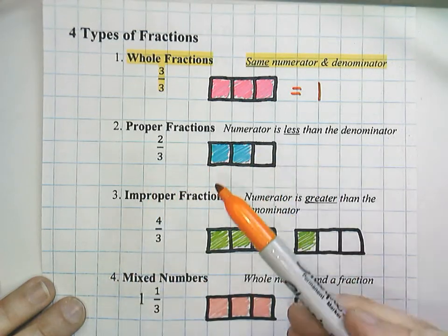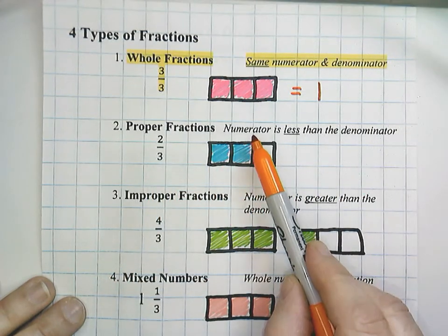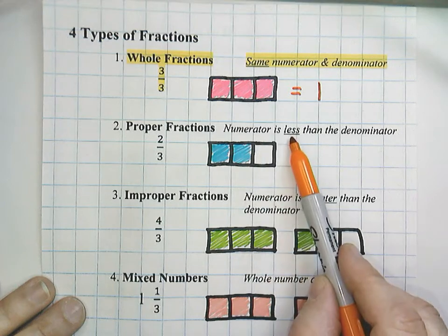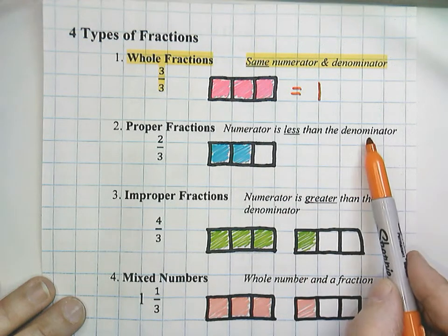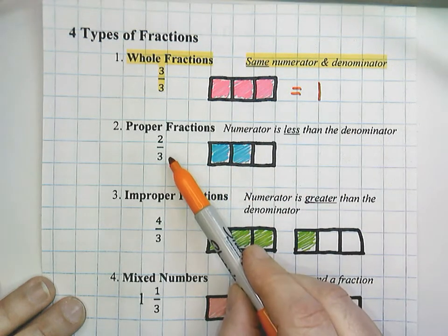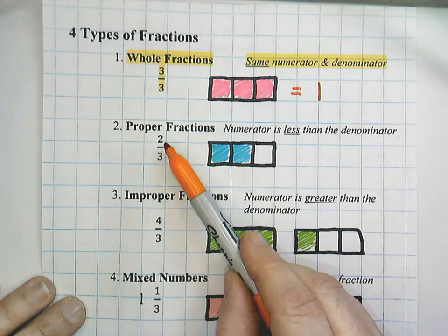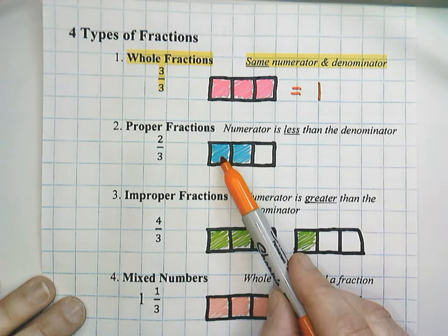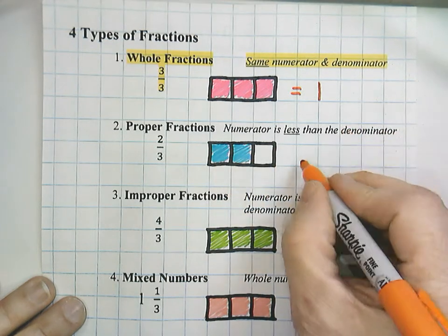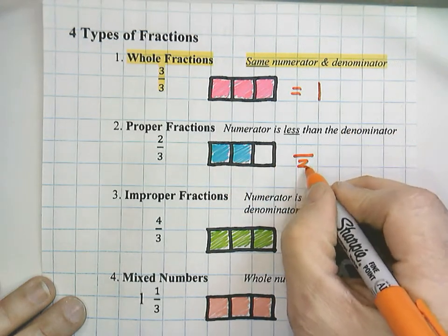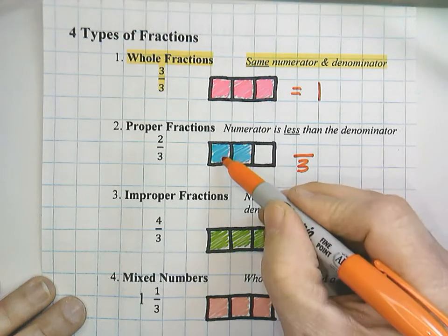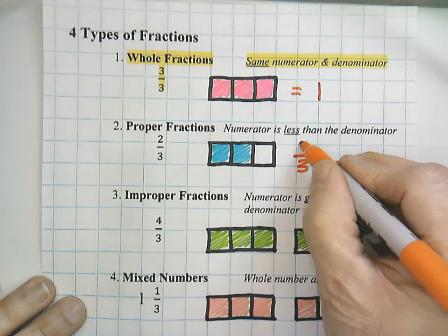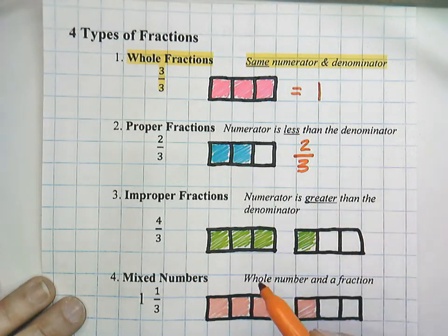Proper fractions are fractions where the numerator is less than the denominator. For example, 2 thirds — notice the number on top, 2, is less than the bottom number, which is 3. That's modeled right here: out of 1, 2, 3 total pieces, only 1, 2 are shaded. So that would be called a proper fraction.